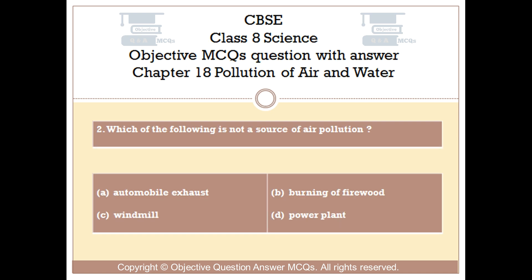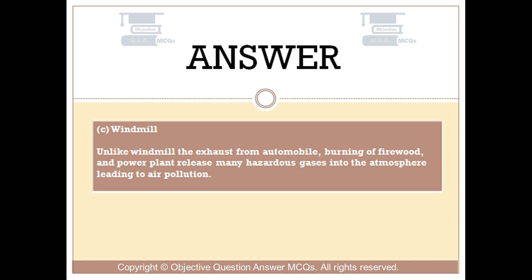Question number 2. Which of the following is not a source of air pollution? Option A: Automobile exhaust. Option B: Burning of firewood. Option C: Windmill. Option D: Power plant. The right answer is Option C — Windmill. Unlike windmill, the exhaust from automobile, burning of firewood, and power plant release many hazardous gases into the atmosphere, leading to air pollution.